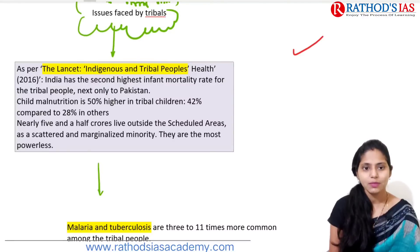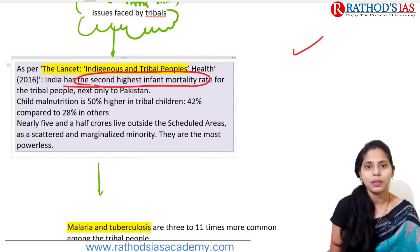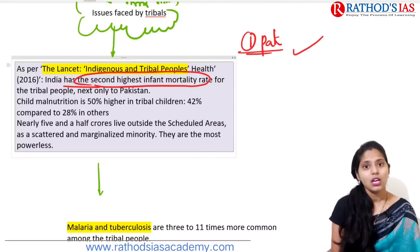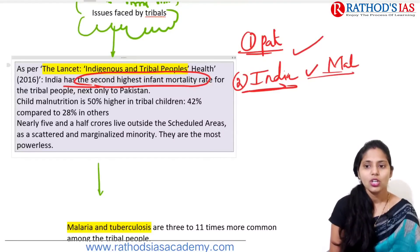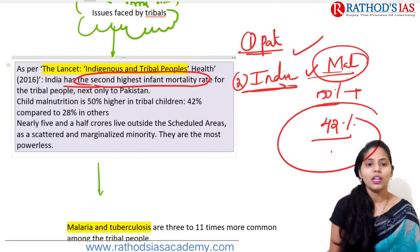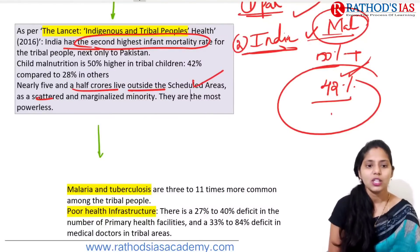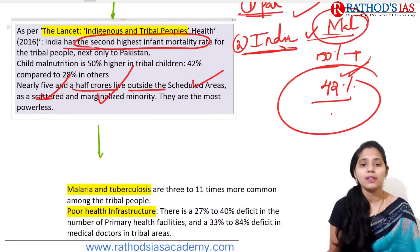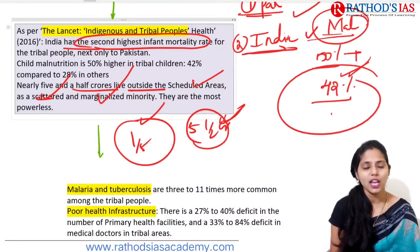The reasons for the high infant mortality rate include malnutrition, which is 50% higher in tribal children compared to others. Additionally, nearly 5.5 crore tribals living outside scheduled areas are scattered and marginalized minorities with little power or representation.